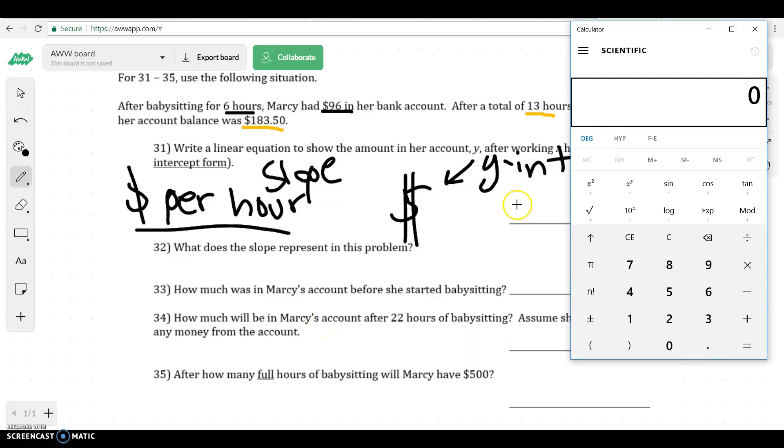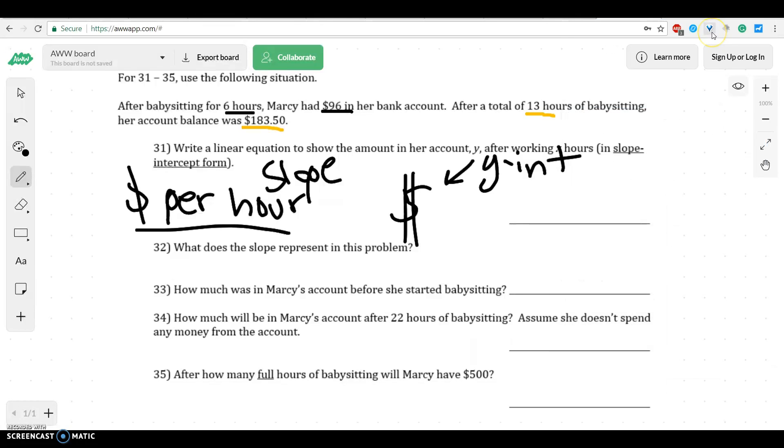So the first thing I want to figure out is how much money did she make after working for 7 hours, because we can see that she worked from 6 to 13, so in 7 hours. Well, I can do that by taking $183.50 and minusing it by 96. That's going to tell me how much money she made in the 7 hours. She made $87.50 in 7 hours, so if I divide that by 7, I can now know that she made $12.50 per hour. So that's how much she's making per hour is $12.50.